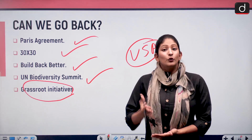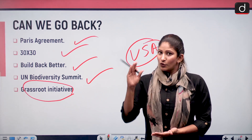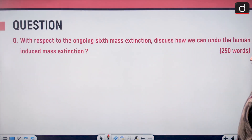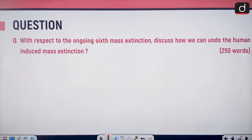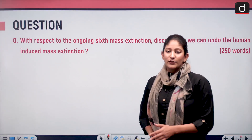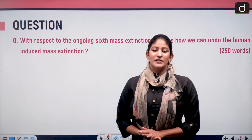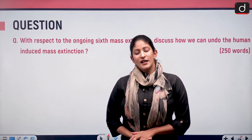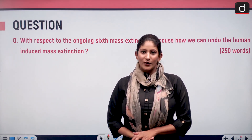For the mains-based question with respect to the ongoing sixth mass extinction: discuss how we can undo the human-induced mass extinction in 250 words. That's it for today — tomorrow we shall meet again with another segment. Until then, stay updated and thank you so much for watching.